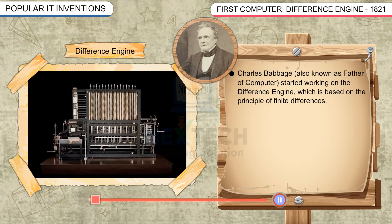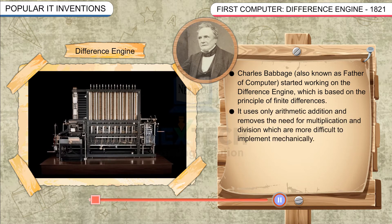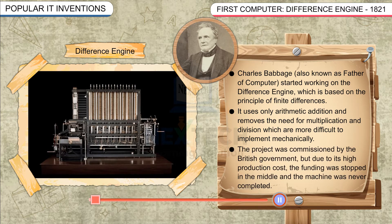Difference Engine, 1821: Charles Babbage, also known as the Father of Computer, started working on the Difference Engine, which is based on the principle of finite differences. It uses only arithmetic addition and removes the need for multiplication and division. The project was commissioned by the British government, but due to its high production cost, the funding was stopped and the machine was never completed.